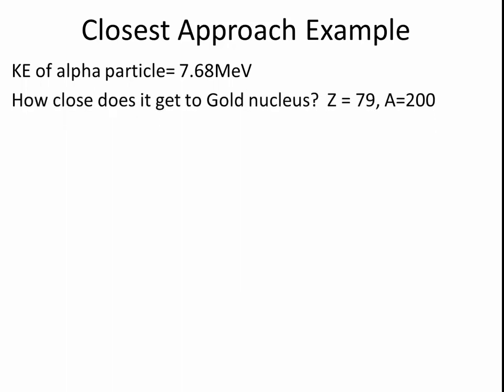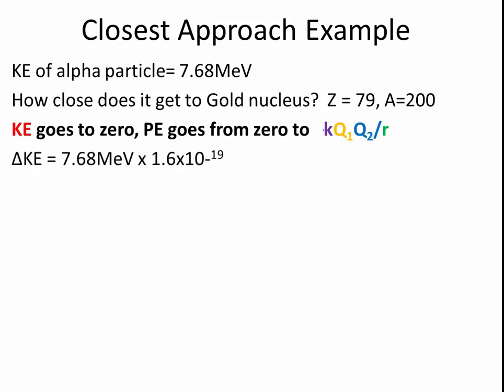Let's look at an example. The kinetic energy of an alpha particle is 7.68 MeV. How close does it get to the gold nucleus? The charge of the gold nucleus is plus 79. We know that the kinetic energy goes to zero and the potential energy goes from zero up to kqq over R. This change of kinetic energy is equal to 7.68 MeV times 1.6 times 10 to the minus 19.